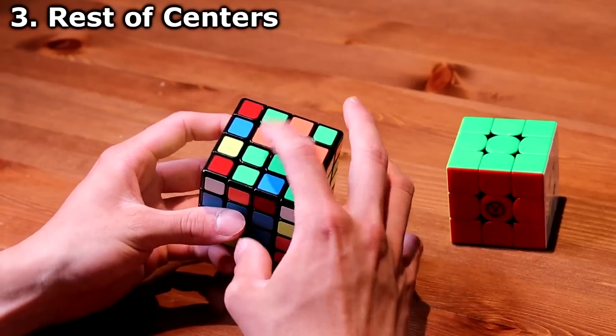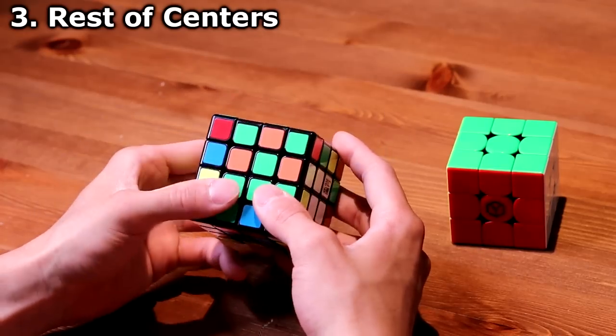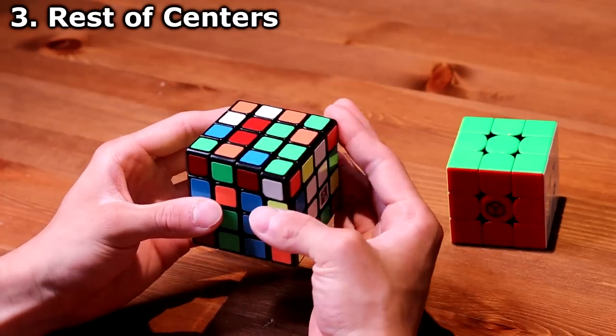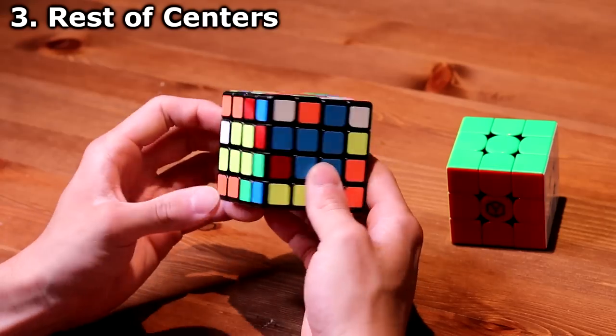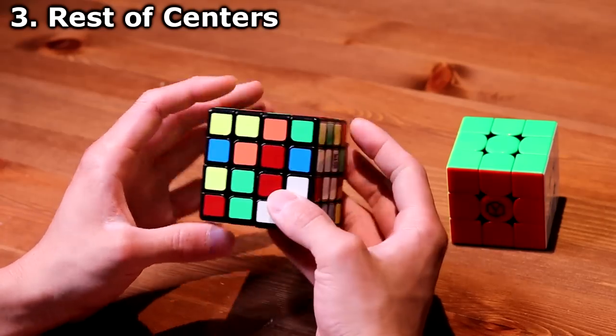and I want to move it to this side. So what I do, I turn it like that, turn that twice, and then put the blue center back. So now there's one 2x1 block for the red.